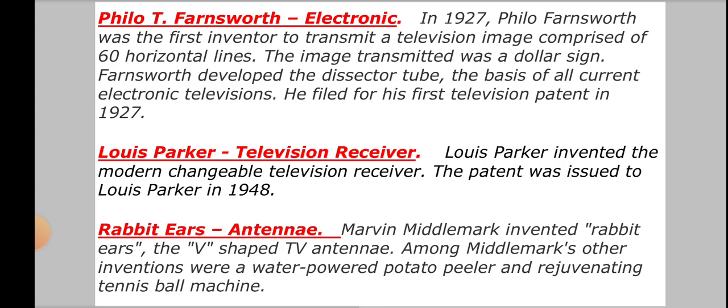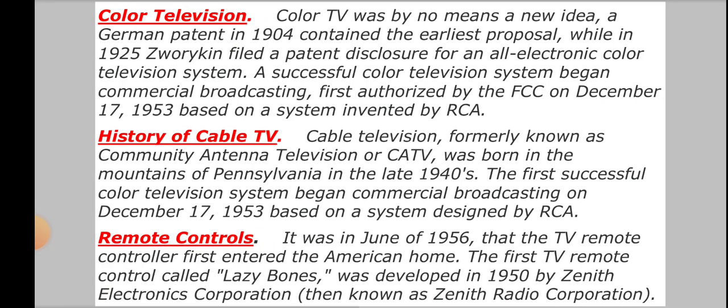Louis Parker invented the modern changeable television receiver, and a patent was issued to him in 1948. Color television was by no means a new idea; a German patent in 1904 contained the earliest proposal, while in 1925 Zworkin failed to patent disclosure of an all-electronic color television system. A successful color TV system began commercial broadcasting first authorized by the FCC on December 17, 1953, based on a system invented by RCA.